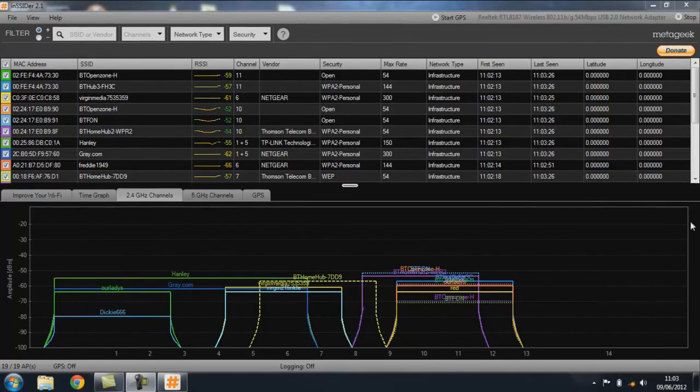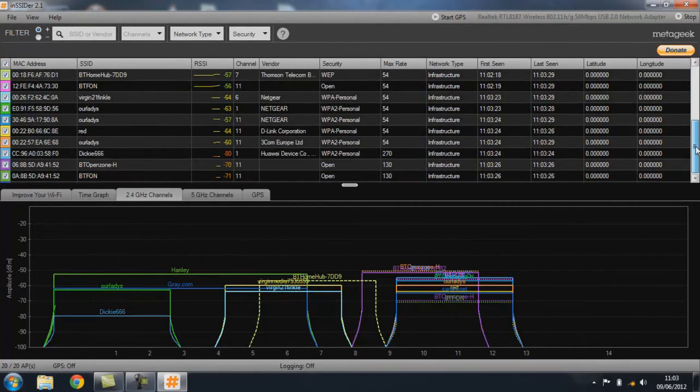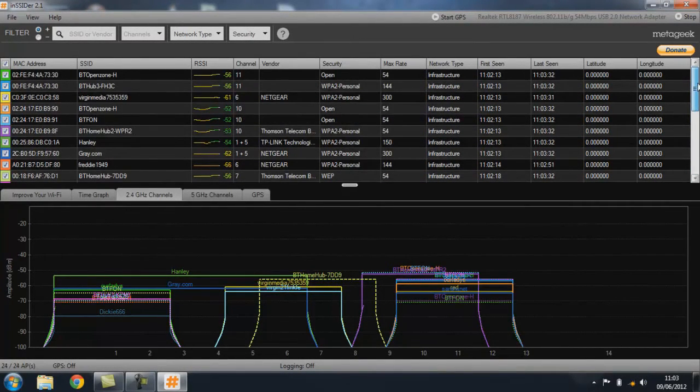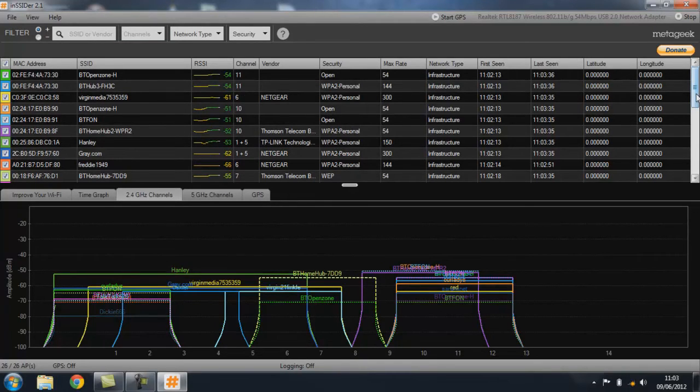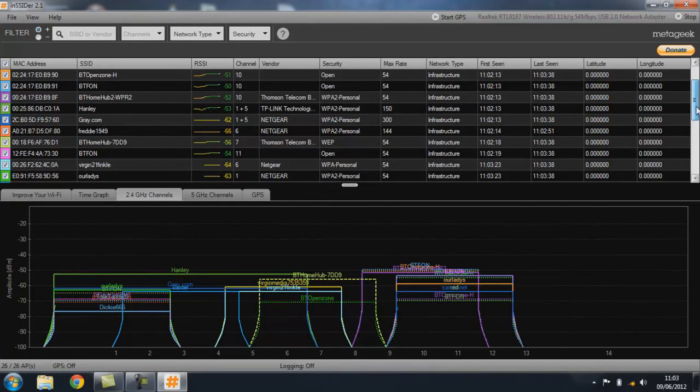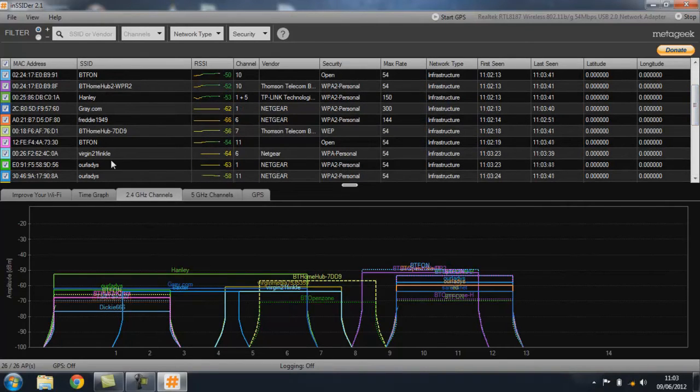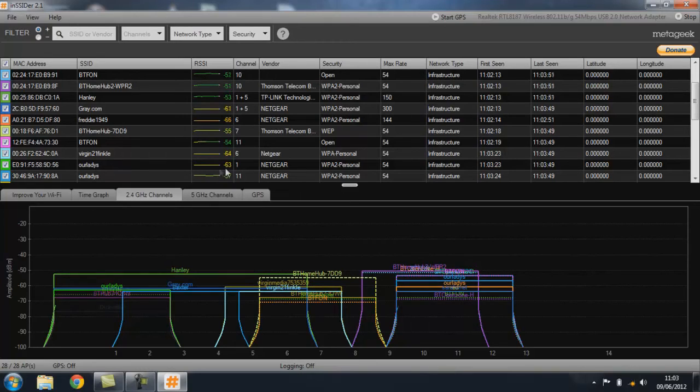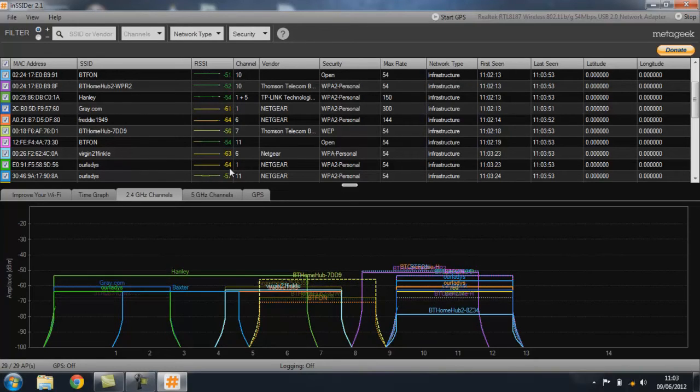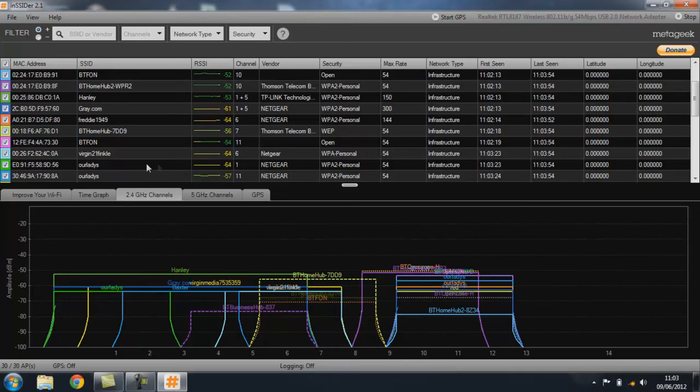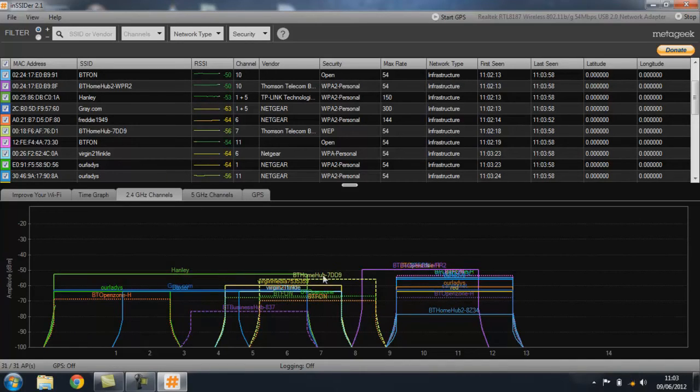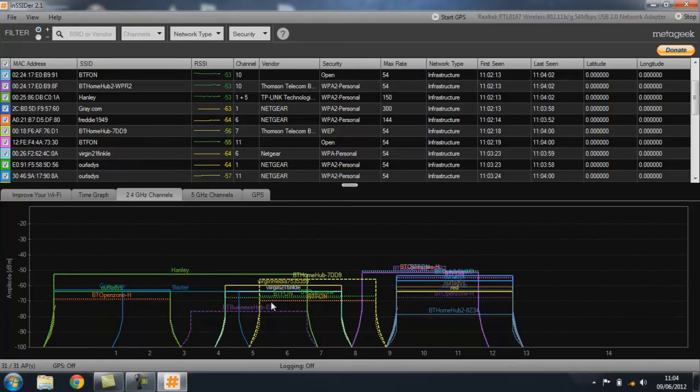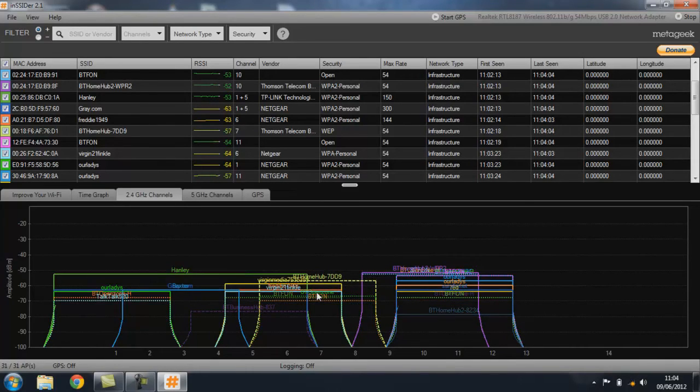Alright, just give it a minute to settle. Right, already you can see way more access points, way more. Now when I'm building my antennas to test them, to see how good they are, I like to use this access point here. Now I do know that's a school and it's about a quarter of a mile away, and you can see here we're getting minus 63, 64 decibel gain loss, which is pretty good, pretty good.